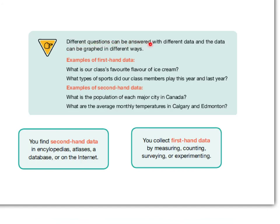Different questions can be answered with different data, and the data can be graphed in different ways. Examples of first-hand data — remember, first-hand data is something you've collected yourself. What is our class's favorite flavor of ice cream? Maybe we've conducted a survey and collected each person's favorite flavor. What type of sports did our class members play this year and last year? You collect first-hand data by measuring, counting, surveying, or experimenting.